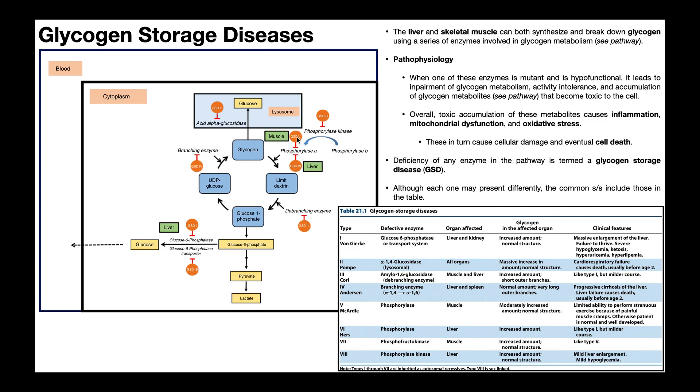Type 5 is going to be McArdle's disease, and this is going to be a deficiency of the enzyme phosphorylase A. Notice there's two forms of phosphorylase A. There's a distinct form in the muscle and a distinct form in the liver. McArdle's disease type 5 affects the one in skeletal muscle only. And so the effects of McArdle's disease are going to be limited ability to perform strenuous exercise due to painful muscle cramps. But otherwise the patient is normal and well-developed, so definitely one of the less severe glycogen storage diseases.